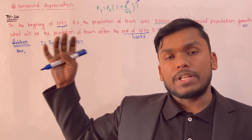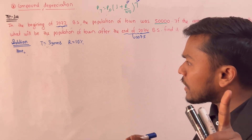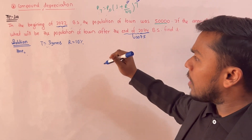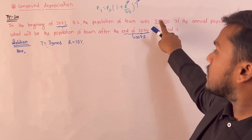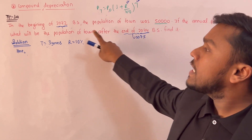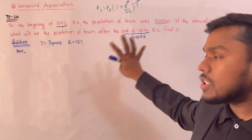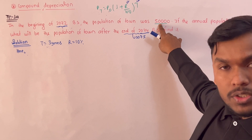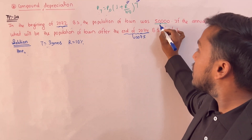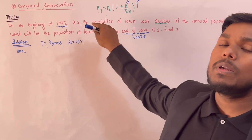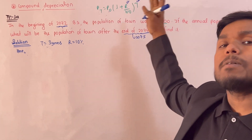So the population has gone down. Now, the population of the town in 1972 — where was the population? In 1972, there was a certain population, so how many people are there in 1975?